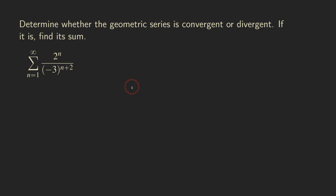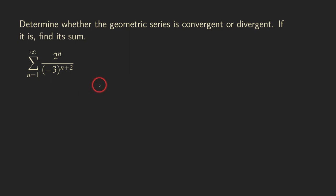Hello everyone, it's Wilson here. Today I want to continue to talk about how to determine whether a geometric series is convergent or divergent. The reason for why I'm picking this example is that it has a negative common ratio.